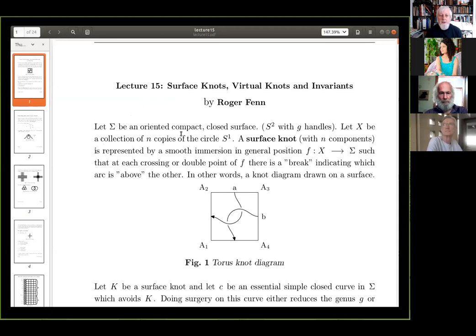So, sigma is an oriented, compact, closed surface. Think of it as S2 with G handles. Of course, if it's not connected, it's several S2s. But anyway, so let X be a collection of N copies of the circle S1, and a surface knot with N components is represented by a smooth immersion, in general position, of this collection of circles into the surface.